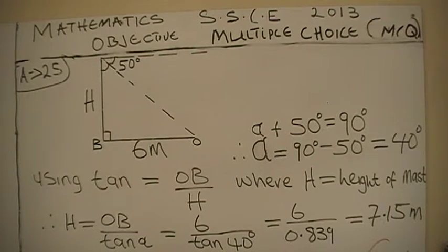Alpha plus 50 degrees equals 90 degrees. Therefore, alpha equals 90 degrees minus 50 degrees, which equals 40 degrees.